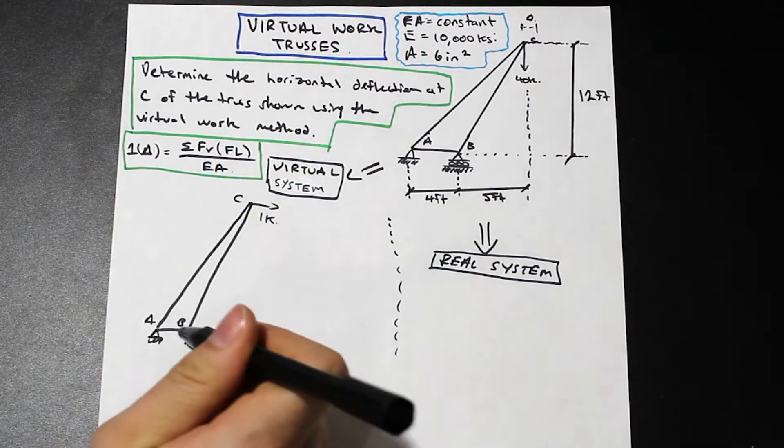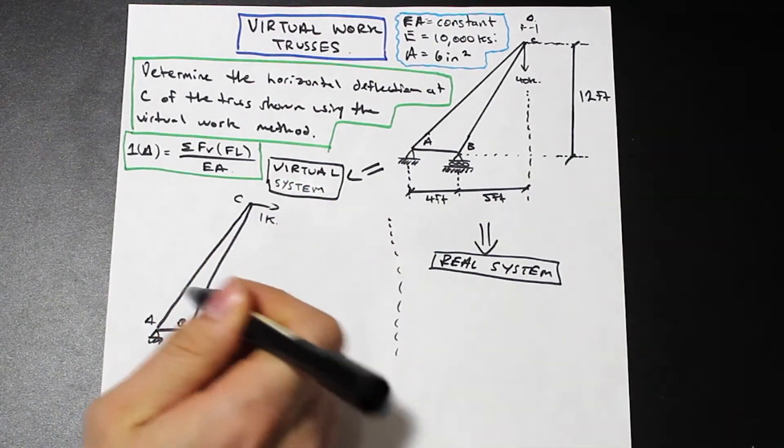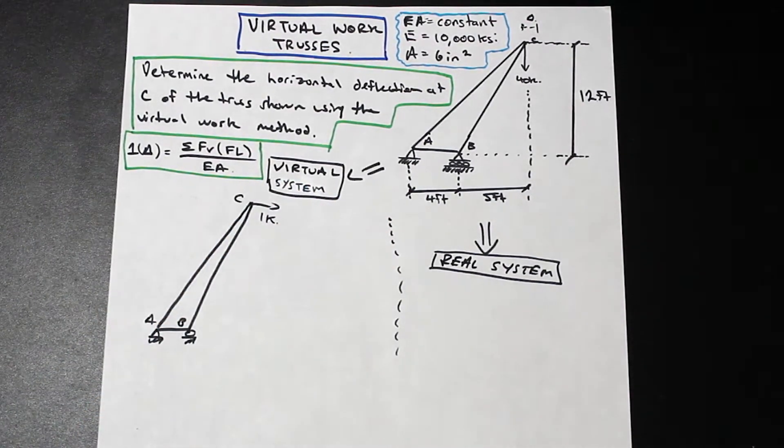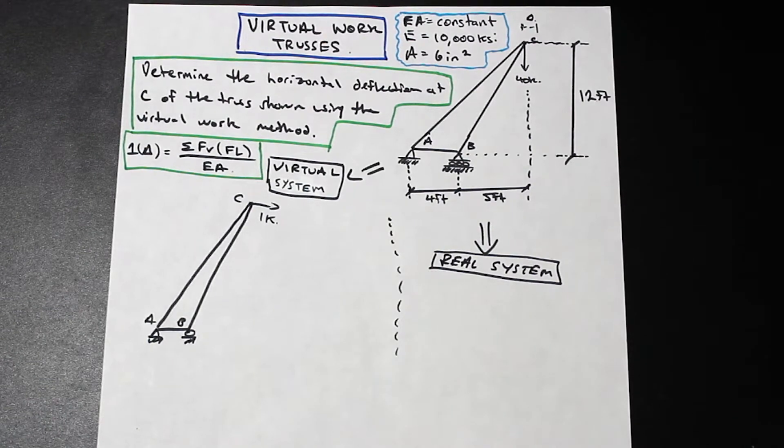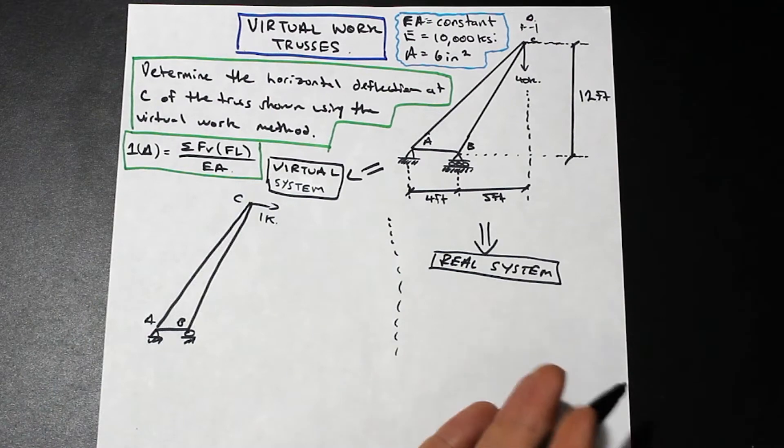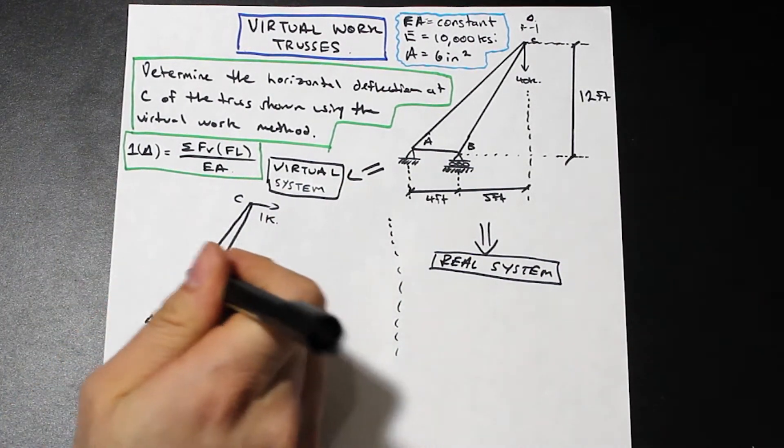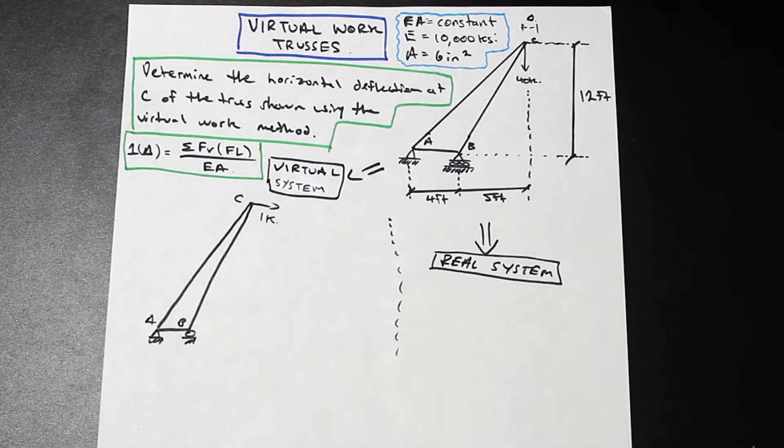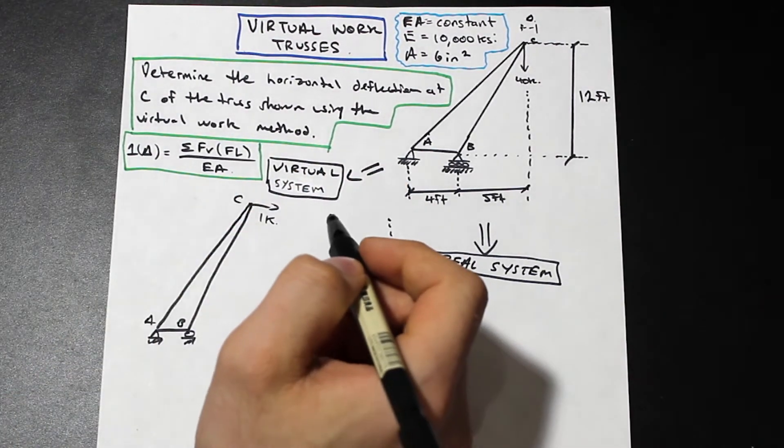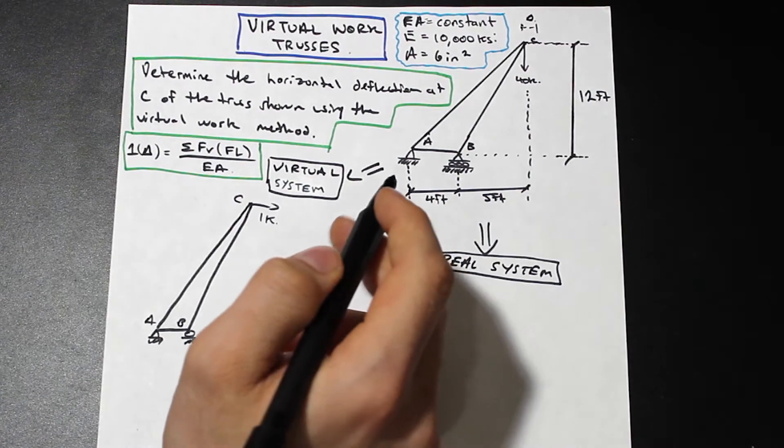Now what we're going to do is we're going to use the method of joints and solve for the axial force in each member. I'm not going to do that in this video because this is just how to solve this problem. We've done videos on joint method before, it's going to take a long time. I suggest that you practice this, go through it, try and solve for the forces in each member here using the method of joints and see what you get.